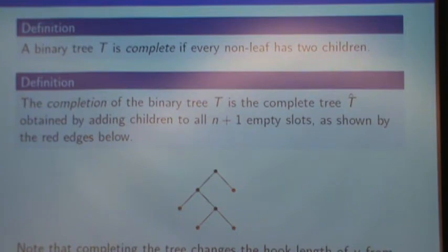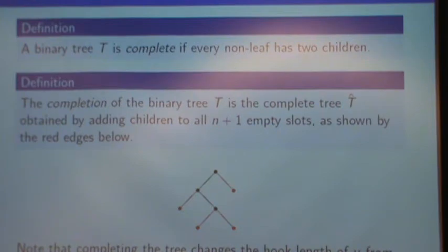Now, I'll state and prove Han's second formula. We define a binary tree to be complete if every non-leaf node of the tree has two children. And there's a canonical procedure for completing a binary tree.